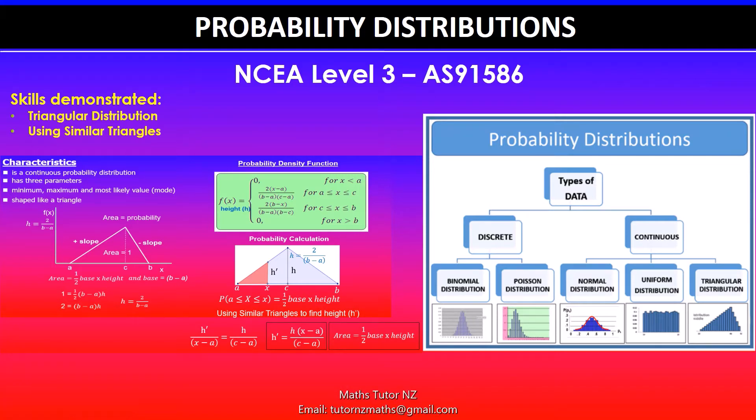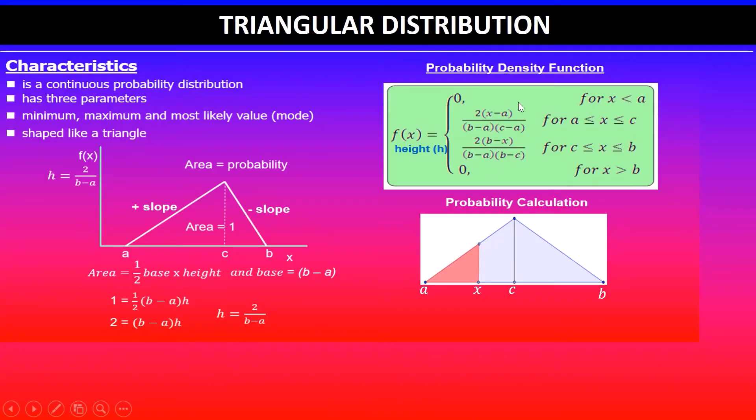Greetings everyone. In this video we'll be looking at NCEA Level 3 probability distributions achievement standard. I'll show you how you can use similar triangles to find the height of a triangle. This is the second part to my previous video. If you haven't already, please check that video out. Remember, this formula needs lots of substitution and you can easily go wrong. To avoid this, you can also use similar triangles.